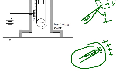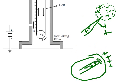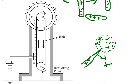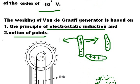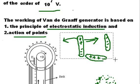These are the two principles — electrostatic induction and action of points — which are used in the working principle of the Van de Graaff generator. Now let us concentrate on the working principle of the Van de Graaff generator.